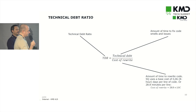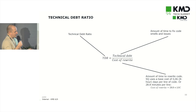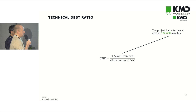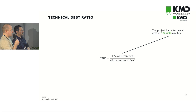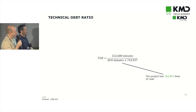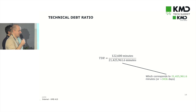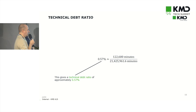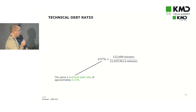It doesn't really matter that much as long as the baseline is consistent throughout. For the last assessment we did, we had 122,600 minutes of technical debt. That sounds like a lot until you consider it had 743,957 lines of code, times the cost of developing a line of code — ending up at around 21,425,000 minutes to rewrite. In that context, the technical debt ratio is less than one percent. We prefer it to be below 5%, so this was extremely low — actually a surprise to us and to the product team as well.